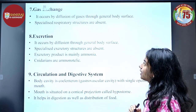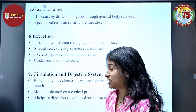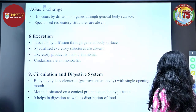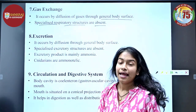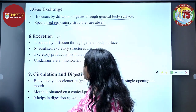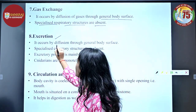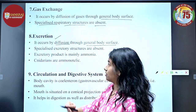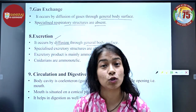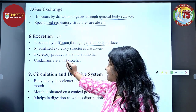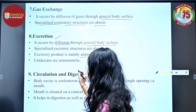Gaseous exchange: there are no specialized respiratory structures, so it occurs by diffusion through the general body surface. Excretion: specialized excretory structures are also absent, so it also occurs by diffusion through the general body surface. The excretory product is mainly ammonia, so cnidarians are ammonotelic in nature.